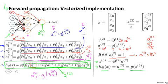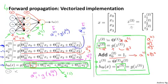This process of computing h of x is also called forward propagation. And it's called that because we start off with the activations of the input units and then we sort of forward propagate that to the hidden layer and compute the activations of the hidden layer. And then we sort of forward propagate that and compute the activations of the output layer. But this process of computing the activations from the input, then the hidden, then the output layer, that's also called forward propagation. And what we just did was we worked out a vectorized implementation of this procedure. So if you implement it using these equations that we have on the right, this will give you an efficient way, a relatively efficient way of computing h of x.